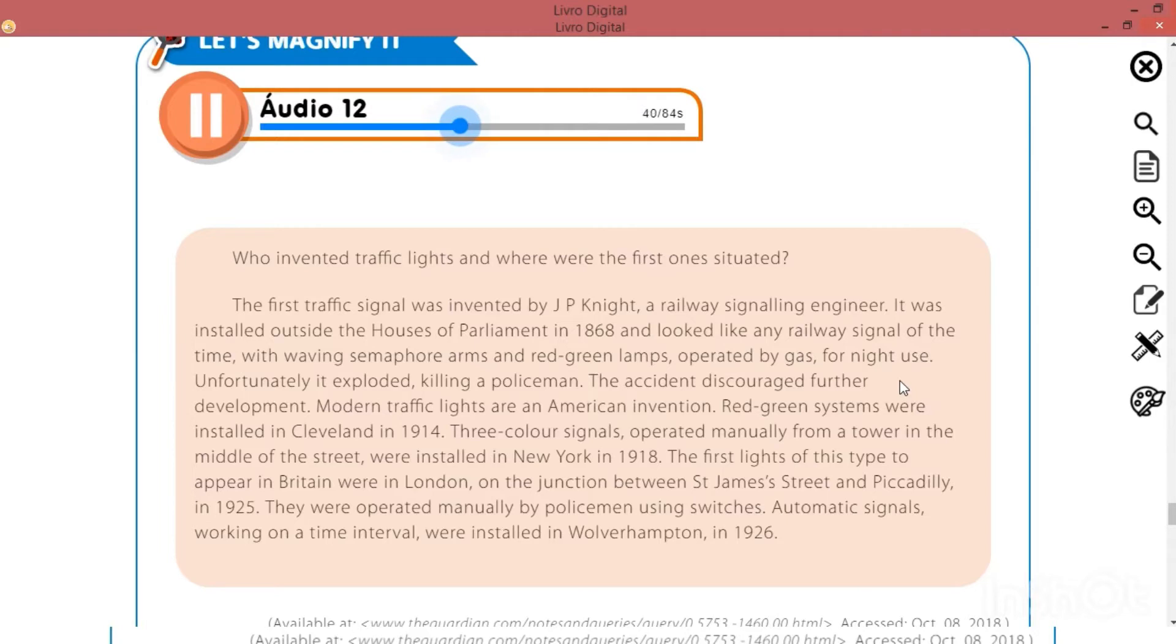Modern traffic lights are an American invention. Red-green systems were installed in Cleveland in 1914. 3-colour signals, operated manually from a tower in the middle of the street, were installed in New York in 1918. The first lights of this type to appear in Britain were in London, at the junction between St. James Street and Piccadilly, in 1925. They were operated manually by policemen using switches. Automatic signals, working on a time interval, were installed in Wolverhampton, in 1926.